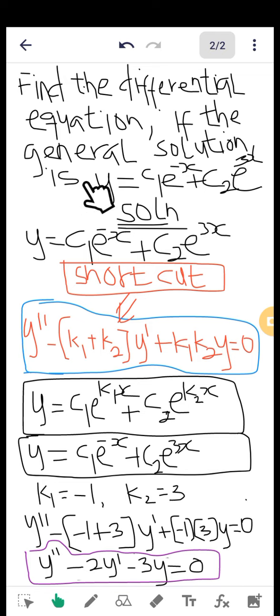This is the general solution. We have been given the general solution, so the shortcut is that we will try to write the general solution in this form: we will write it as c1*e^(k1*x) + c2*e^(k2*x), where k1 and k2 are constants.